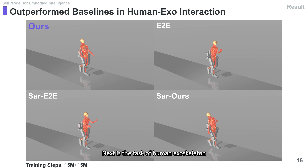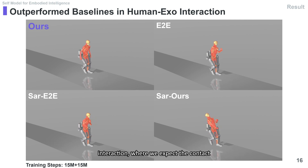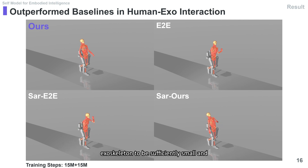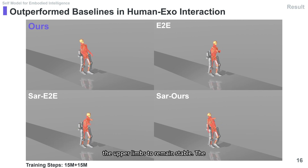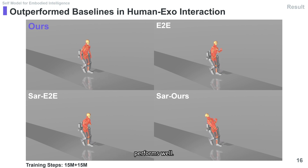Next is the task of human-exoskeleton interaction, where we expect the contact force between the human and exoskeleton to be sufficiently small and the upper limbs to remain stable. The results show that our algorithm also performs well.